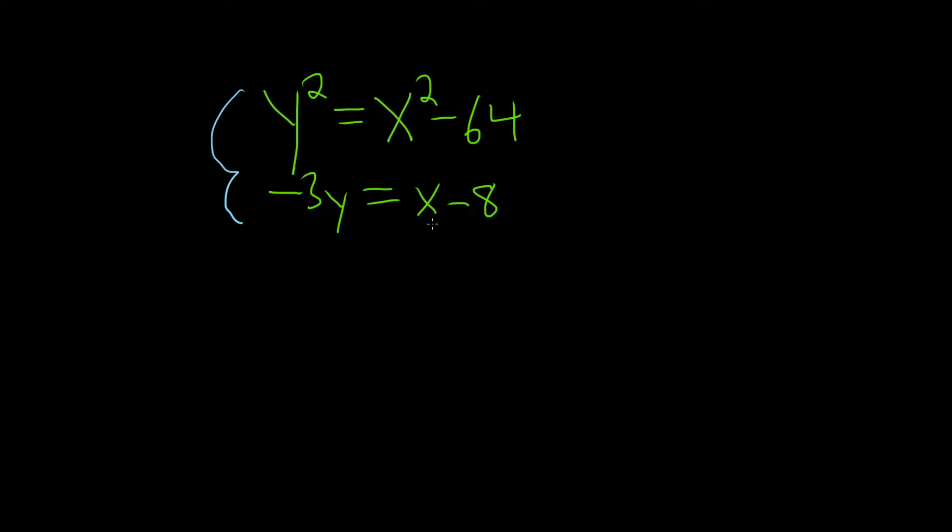I think the easiest variable to solve for is x down here, so we can just add 8 to both sides. So if I do plus 8 plus 8, we end up with x equals 8 minus 3y.